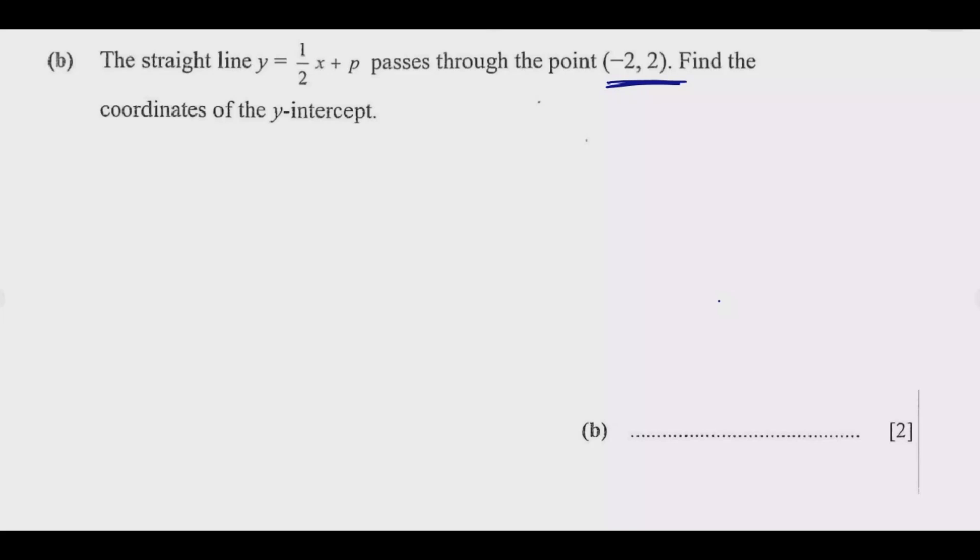So if the straight line is passing through that point, it means we have one point (x, y). Meaning that x = -2 when y = 2.